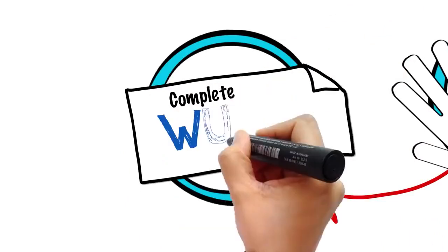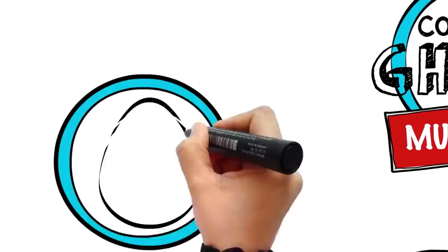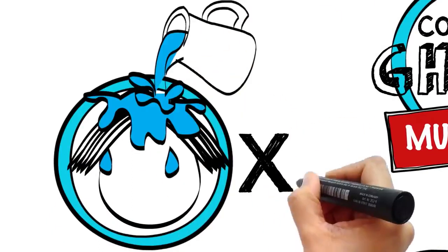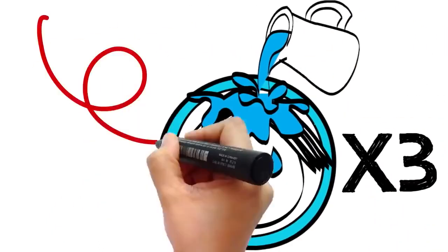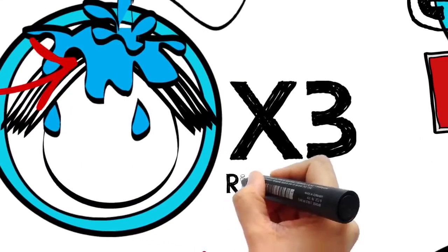Then make a complete wudhu, just as you would for prayers. Then pour water over your head three times, rubbing and making sure that it thoroughly reaches your scalp. Some scholars said three times means once on the right, next on the left, and then in the center.